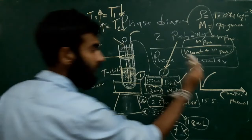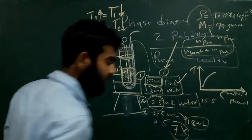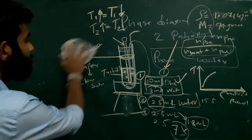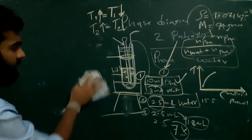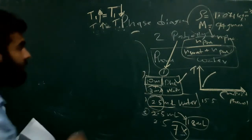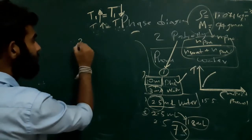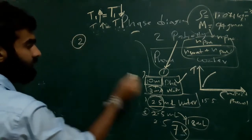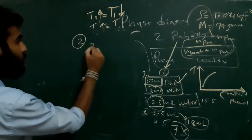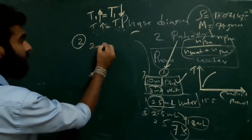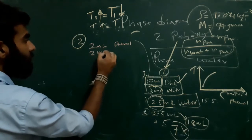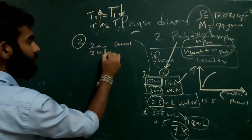By using this first set of data, we obtain the first half of the curve. So we will use a second set of experiments also. In the second set, we will use 2 ml of phenol and 2 ml of water.